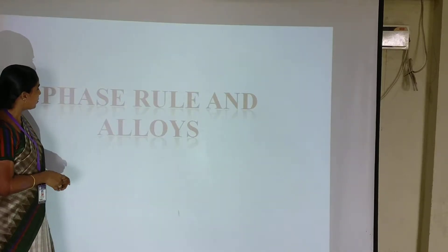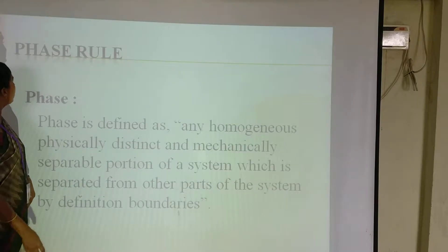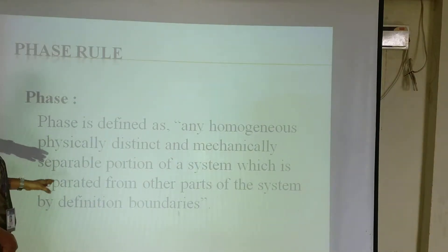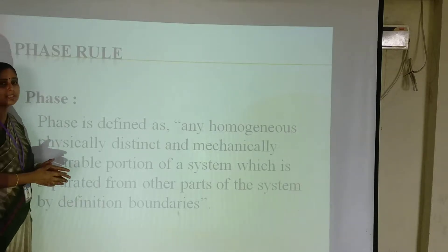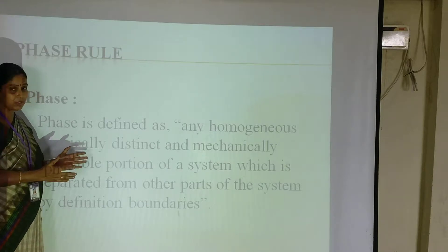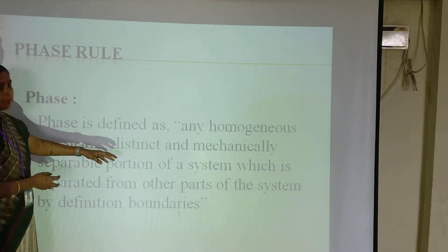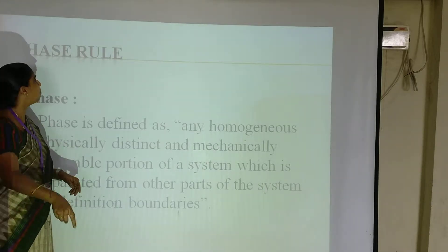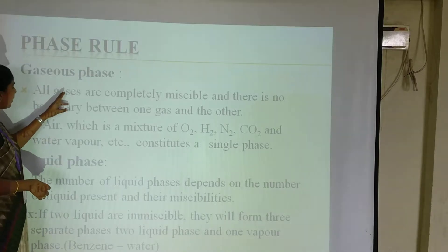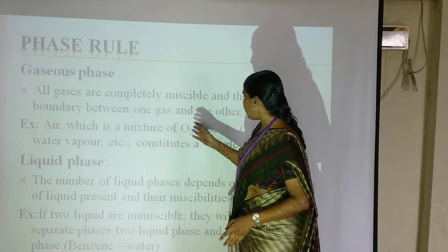Today we are going to discuss about the phase rule and alloys. Phase is defined as any homogeneous, physically distinct and mechanically separate portion. It is possible to see the differentiation and we are able to separate the system by mechanical means. Phase has different types — for example, the gas phase. The gas phase is completely miscible with each other, for example air.